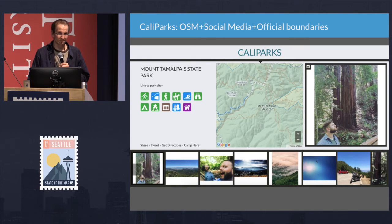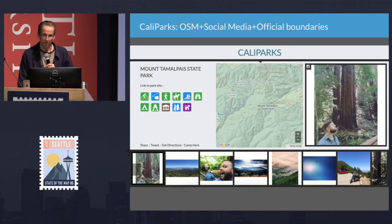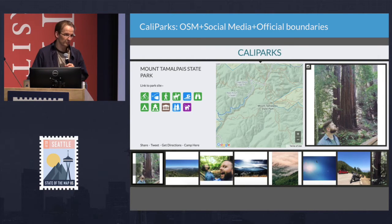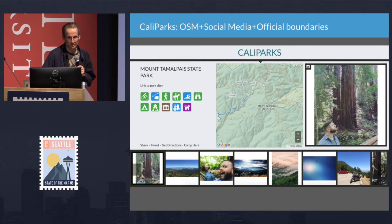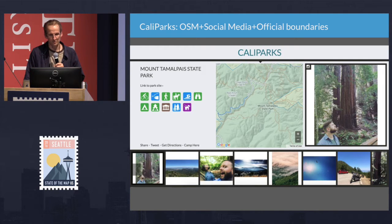Just for reference, there are about 13,000 parks and publicly accessible protected lands in California, managed by about 1,000 agencies — so a lot of stuff.